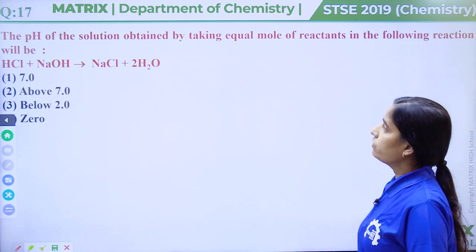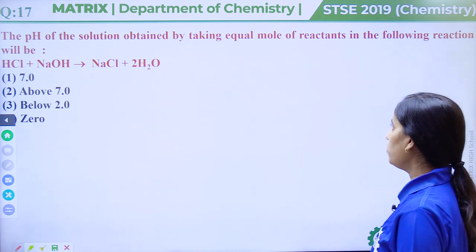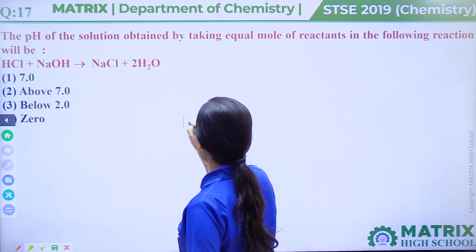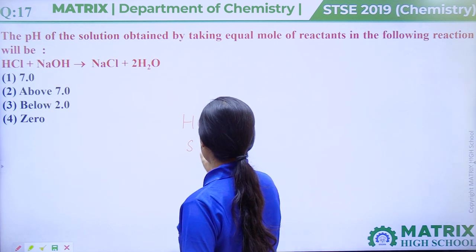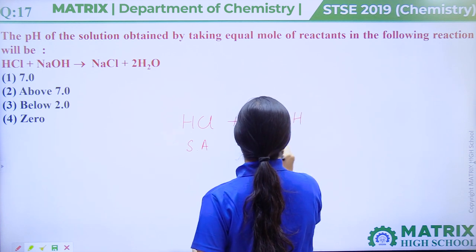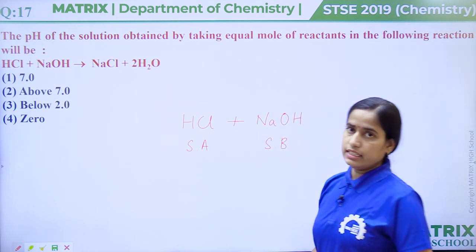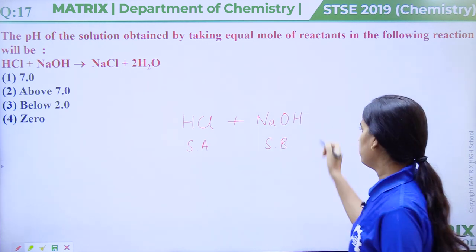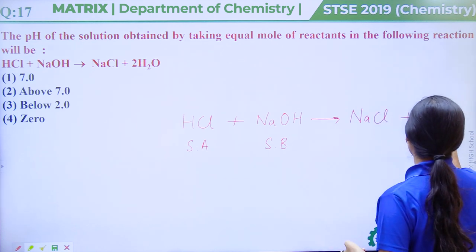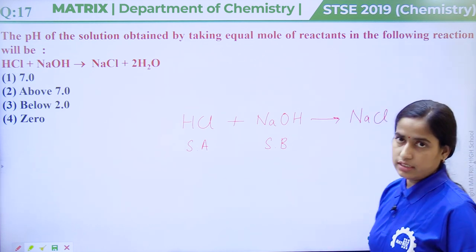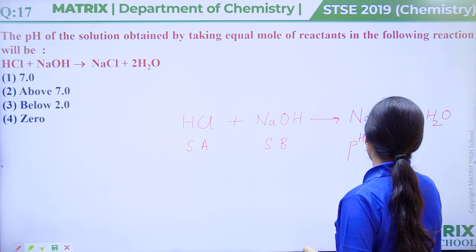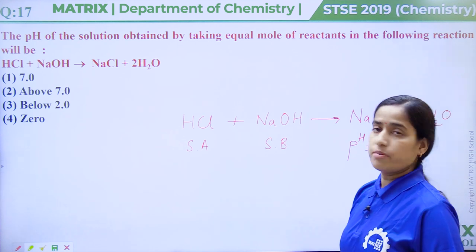Question number 17: The pH of the solution obtained by taking equal moles of reactants in the following reaction will be. HCl is a strong acid and NaOH is a strong base. When a strong acid reacts with a strong base, they form a neutral salt NaCl and water. If the salt is neutral, then pH will be 7. So the pH of NaCl is 7, and the correct answer is option number 1.